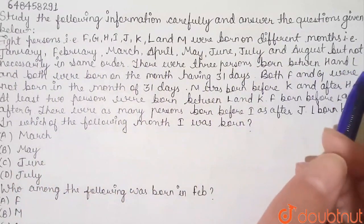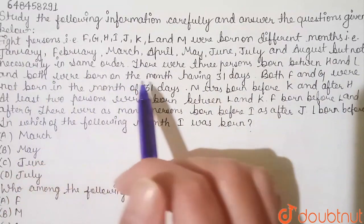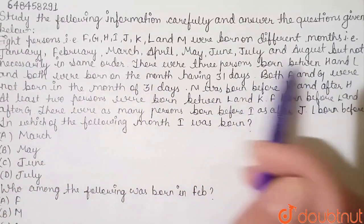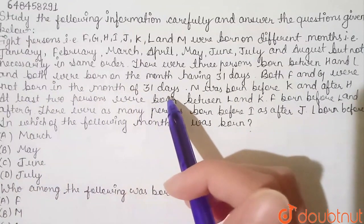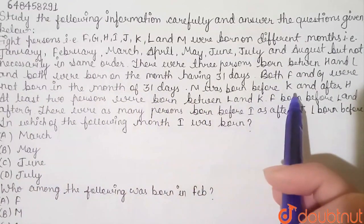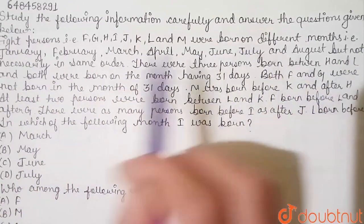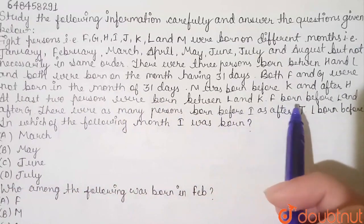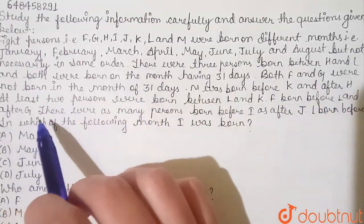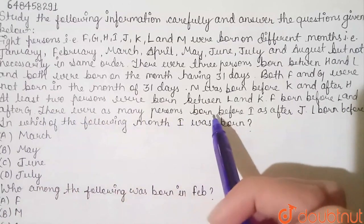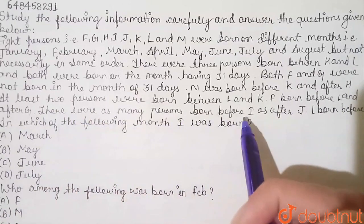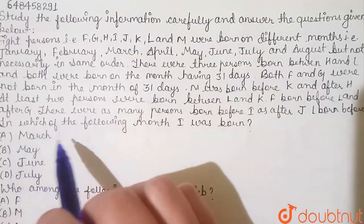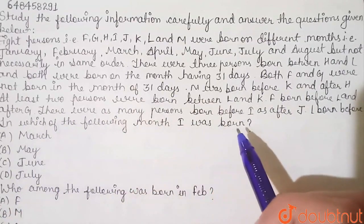There were 3 persons born between H and L, and both were born on the month having 31 days. Both F and G were not born in the month of 31 days. M was born before K and after L. At least 2 persons were born before L and K. F was born before L and after G. There were as many persons born before I as after J.